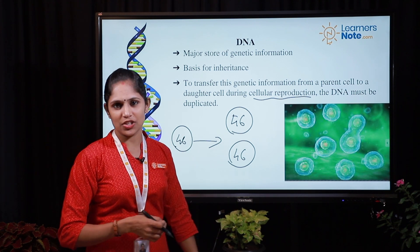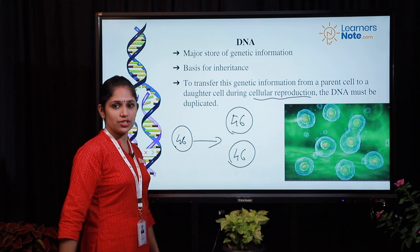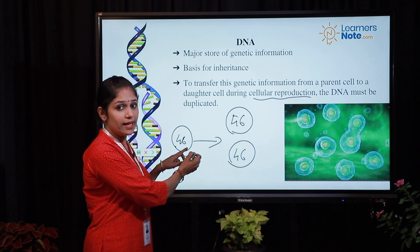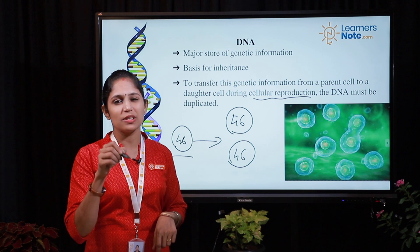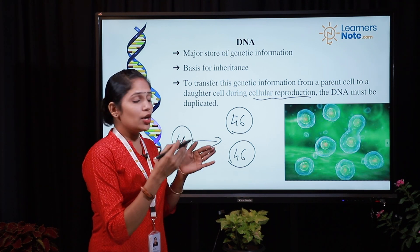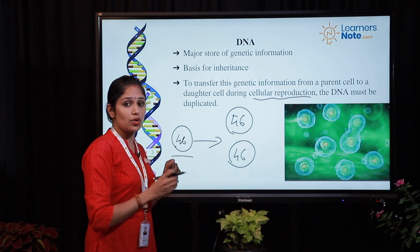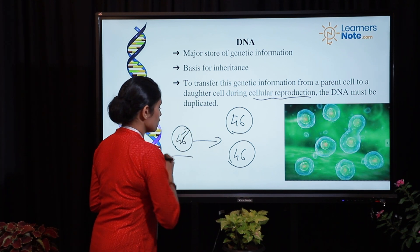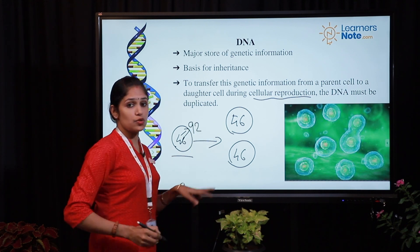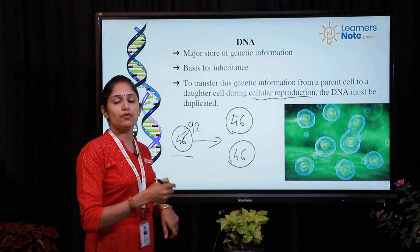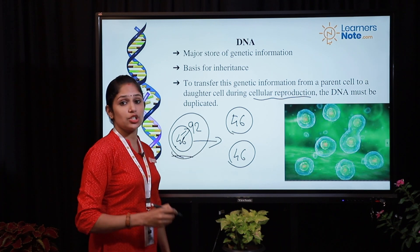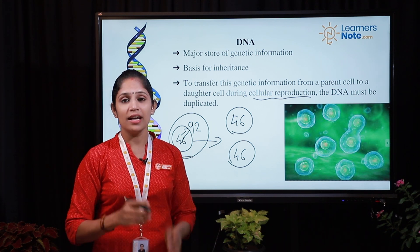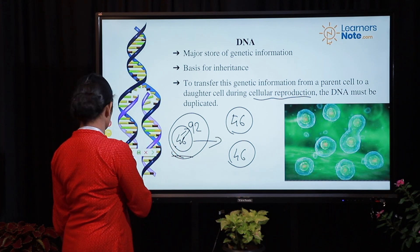Here comes the importance of DNA replication. Before cellular reproduction, the parental cell needs to duplicate or make an exact copy of its DNA. Since the human cell has 46 chromosomes, these 46 chromosomes must be duplicated — producing 92 total — before cellular reproduction. That process of production of an exact copy of DNA is known as DNA replication.